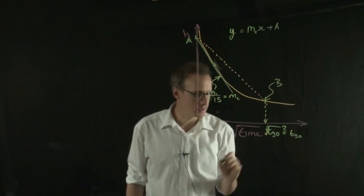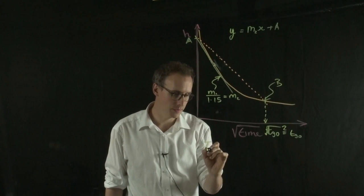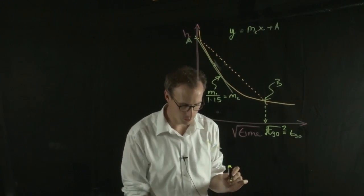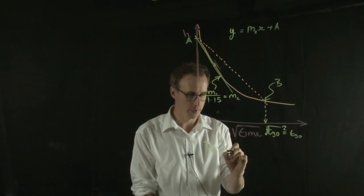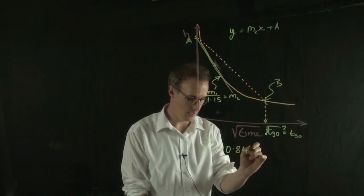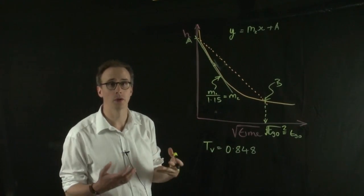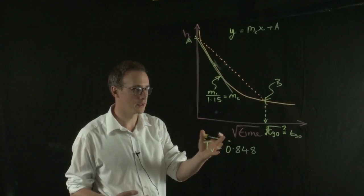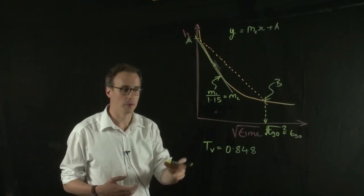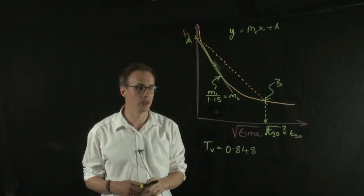And I know that if T90, my Tv value will be equal to 0.848. And I know that from either an equation or a table. So for T90, I know my Tv value is 0.848.